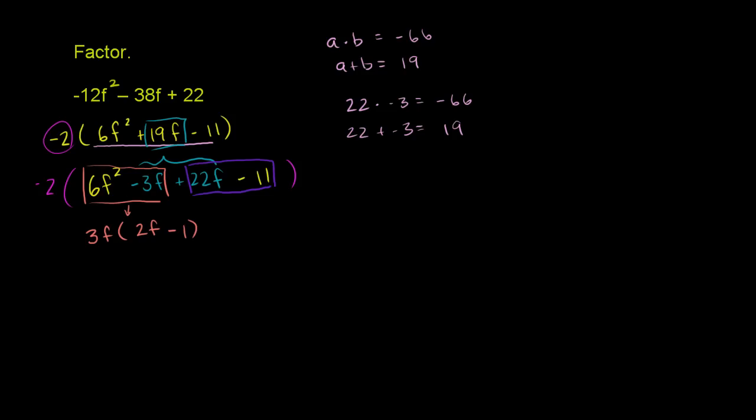And then that second part, we can factor out an 11. If we factor that out, 22f divided by 11 is 2f. And -11 divided by 11 is -1. So that's 11(2f - 1). And of course, once again, you have that -2 hanging out there.